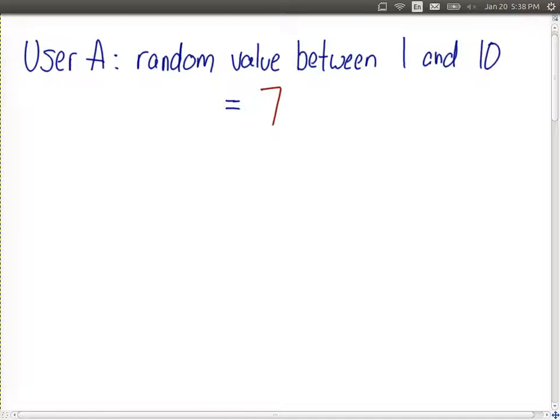And we have another user, user B, who's trying to guess what value A chose. So B doesn't know that A chose 7. What B can do, given that it knows A chose between 1 and 10, is make guesses between 1 and 10. So let's say on the first attempt, they choose randomly between 1 and 10.